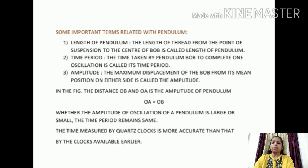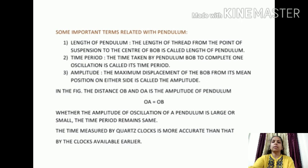Nowadays, most clocks and watches have electric circuits with one or more cells. These clocks are called quartz clocks, and the time measured by quartz clocks is more accurate than that by clocks available earlier. So, today I conclude here. Go through the videos and revise from NCERT books for better understanding of the numericals which will be discussed in coming videos. Thank you, students.